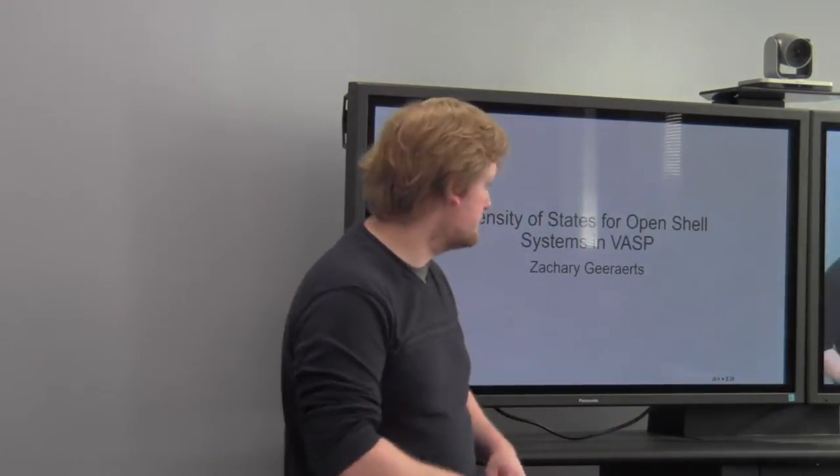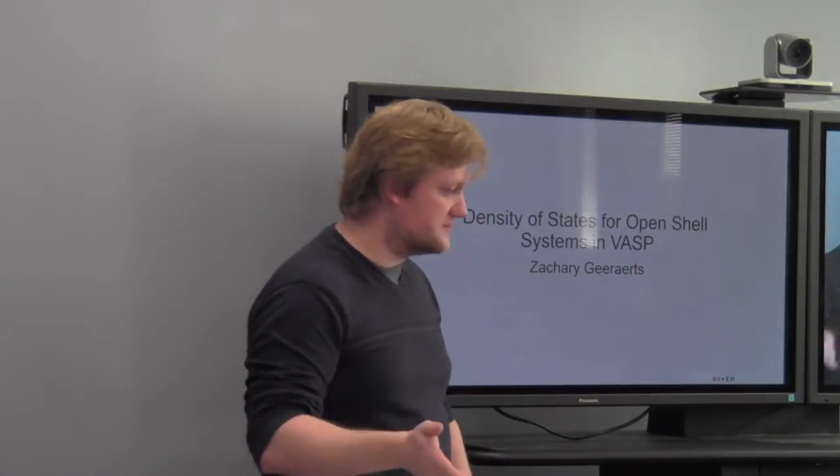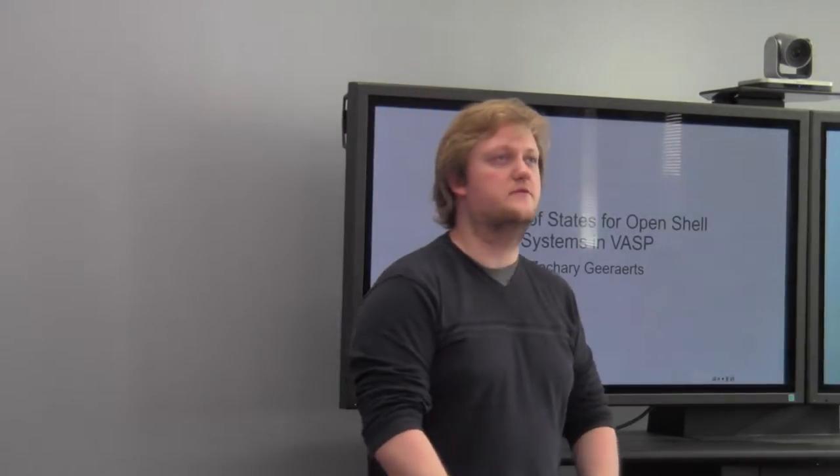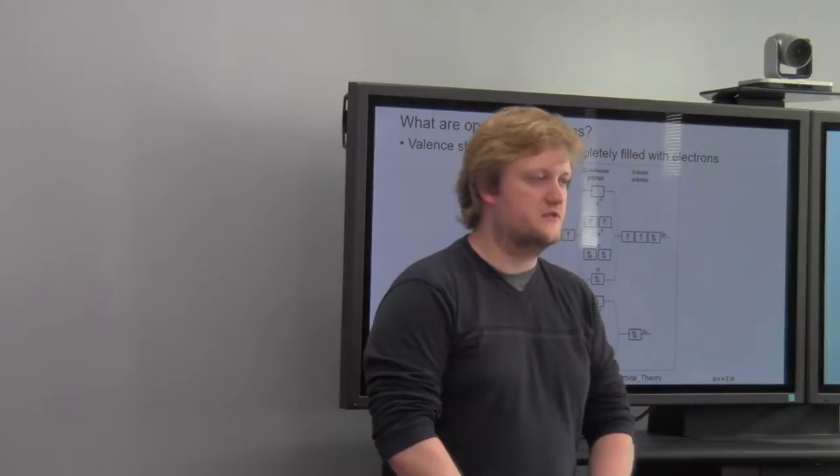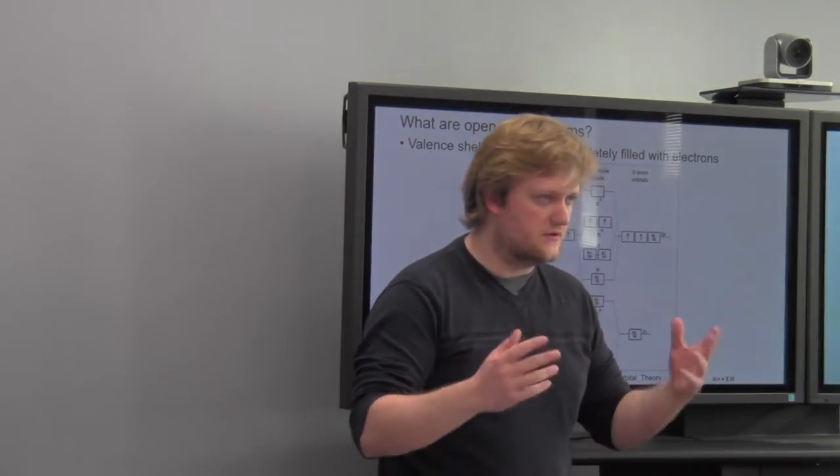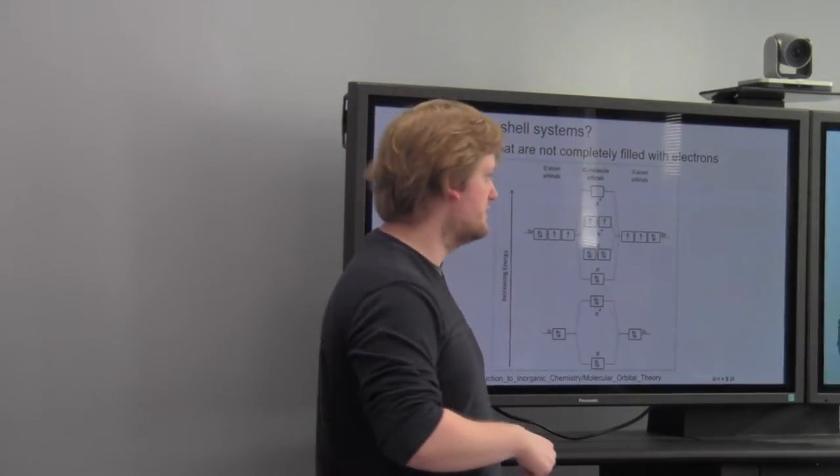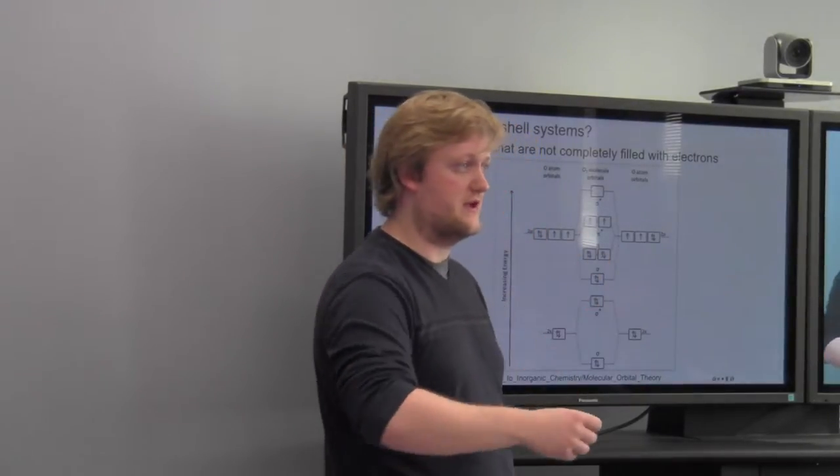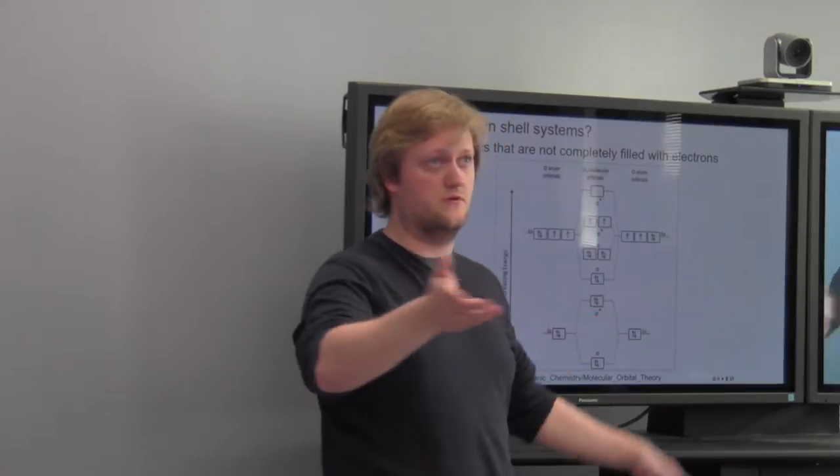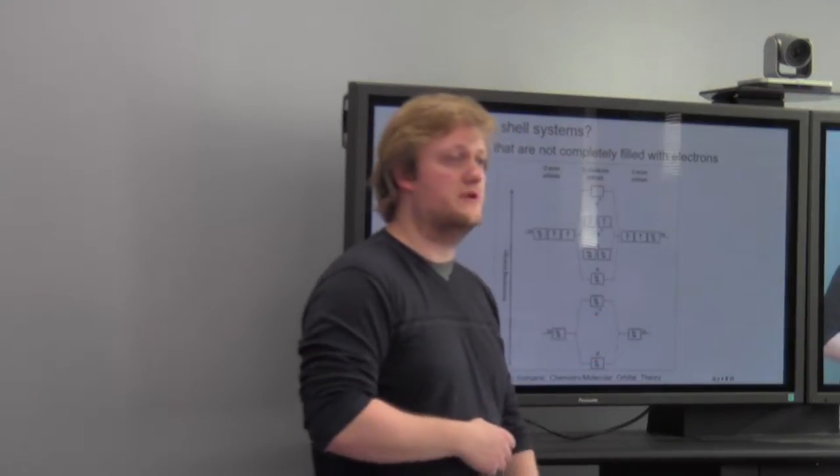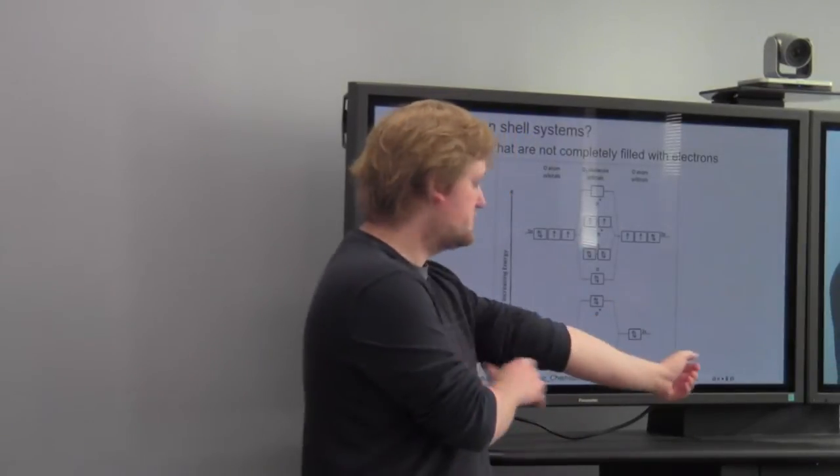All right. So, I'm Zach, and I will be talking about how to look at open-shell systems in VASP, specifically their density of states. Okay. So, what's an open-shell system? Well, we all know what valence shells are. And if they are filled, they'll have spin-pairing, right? Well, if we do not have spin-pairing, and we only have one electron occupancy per orbital, in the case of oxygen, we now have an open-shell system.